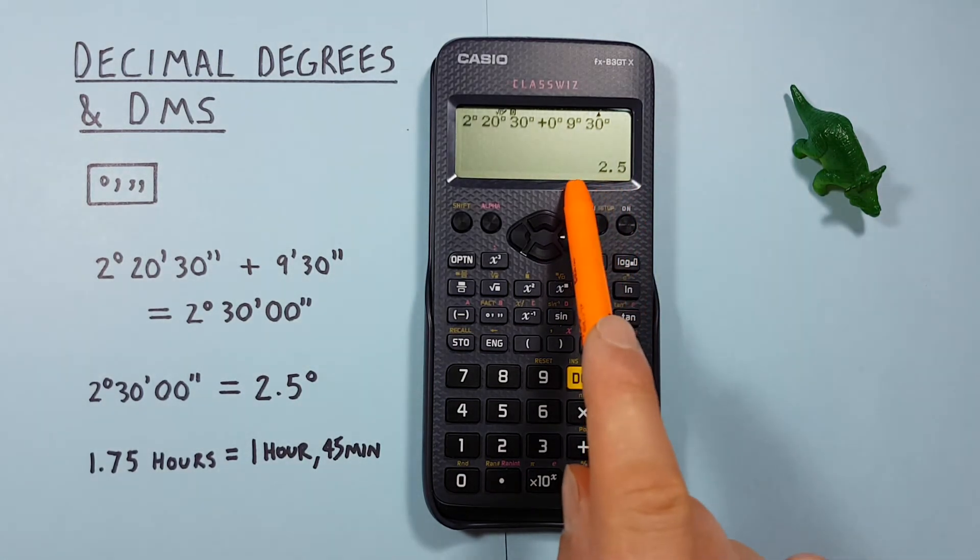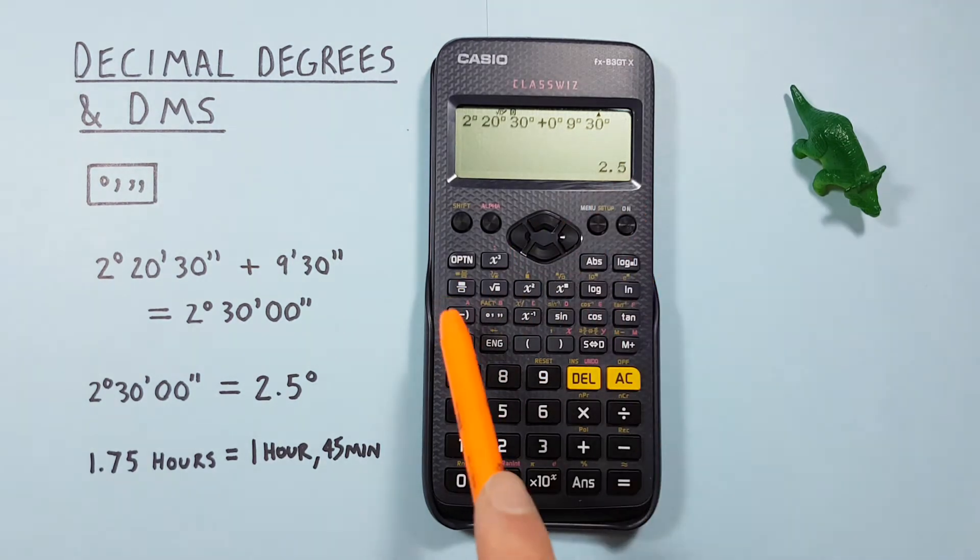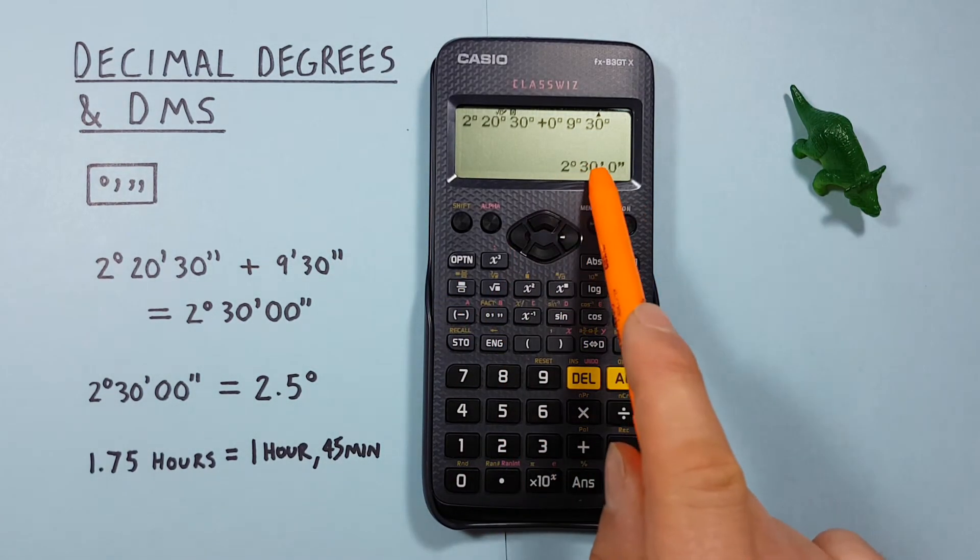Which we know is the same as 2 degrees 30 seconds. If we press it again, we're back to degrees minutes seconds.